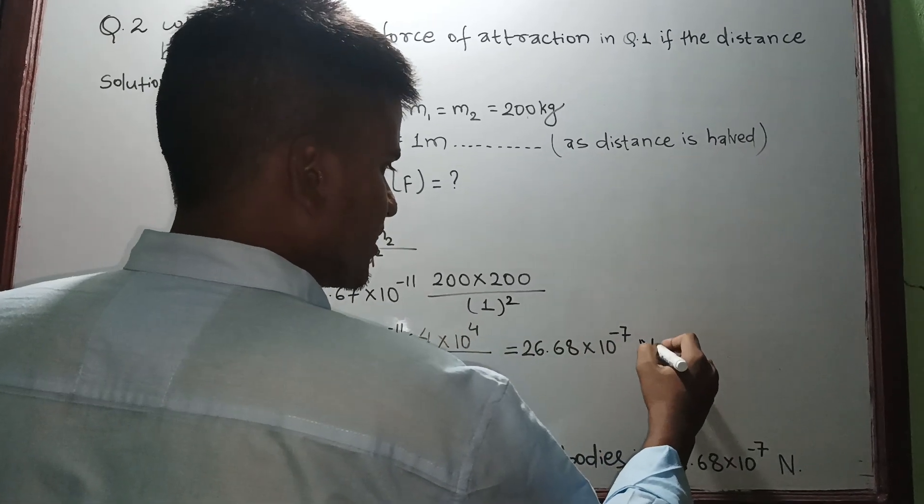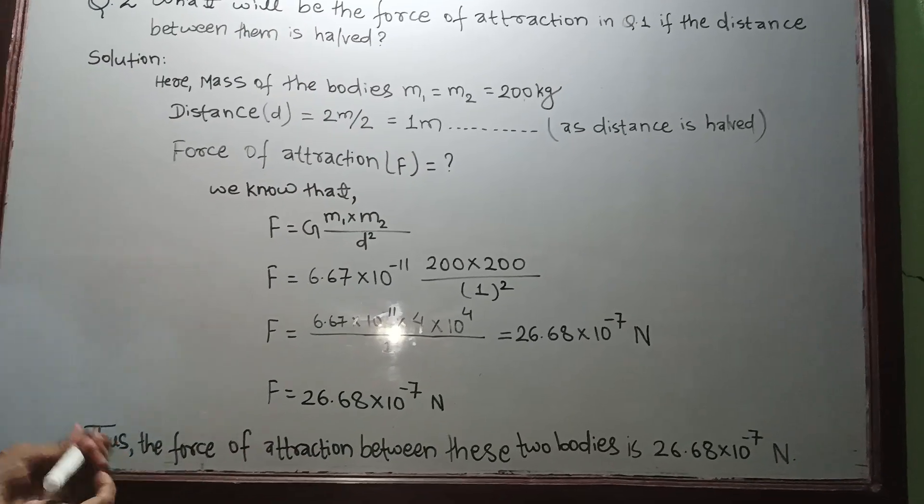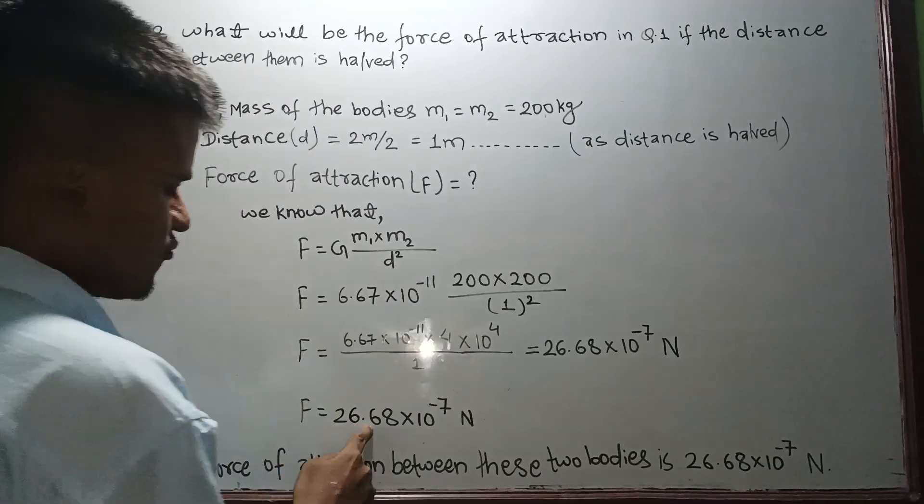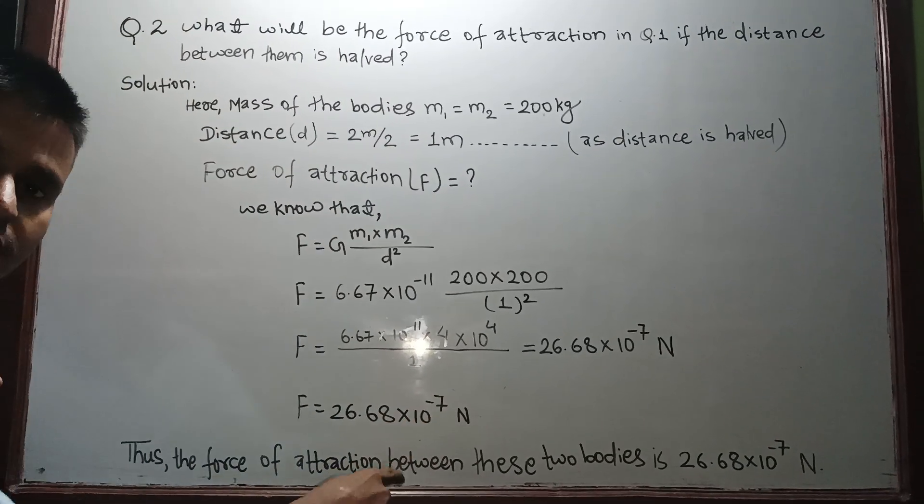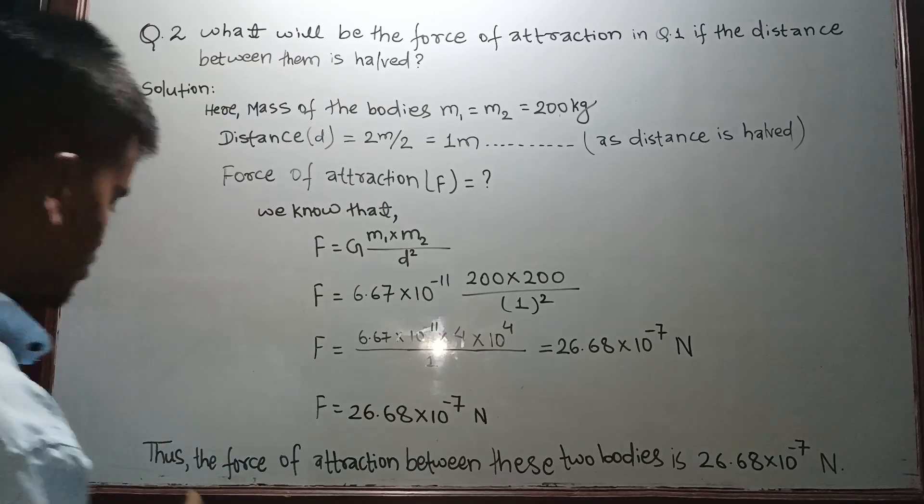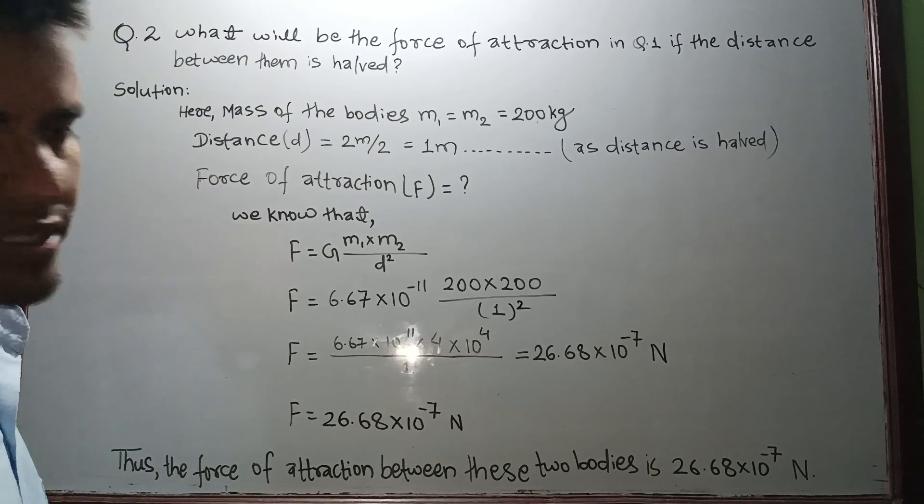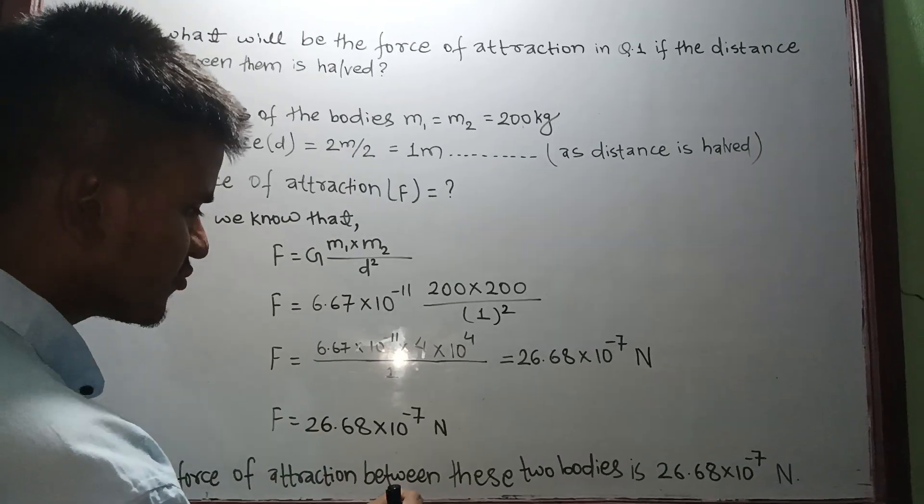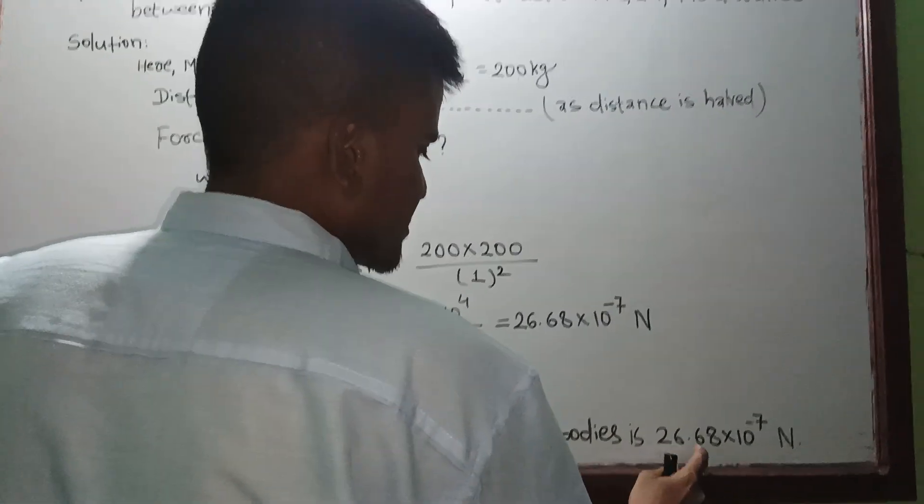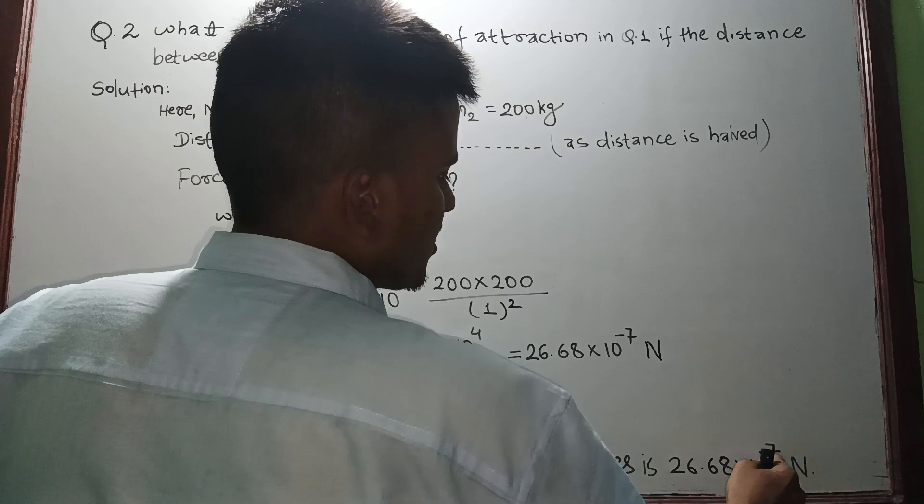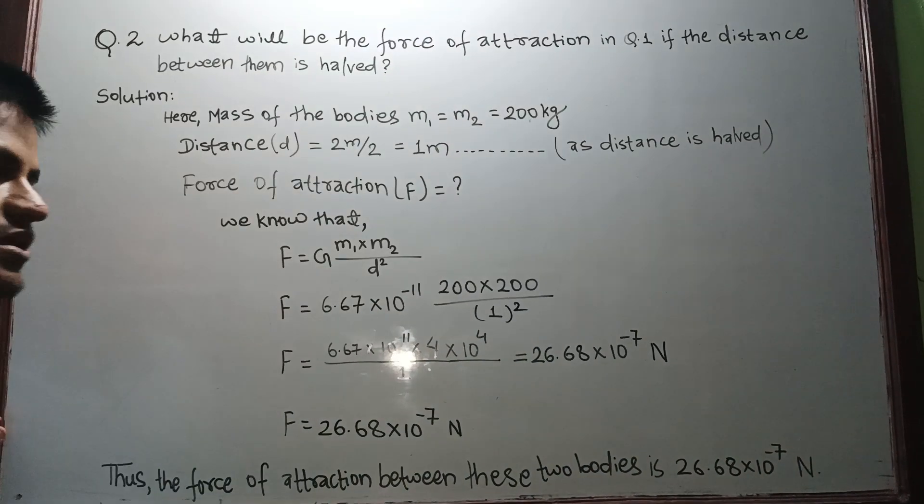So now thus, in a beautiful way we will write it: Thus the force of attraction between these two bodies is 26.68 × 10⁻⁷ Newton. Now see, there is a catch.